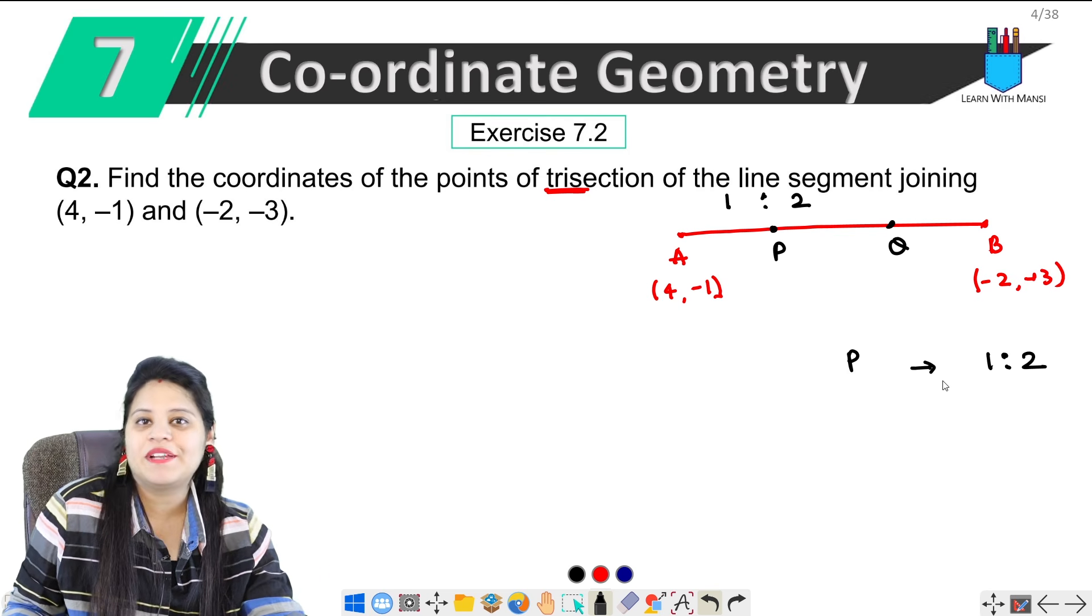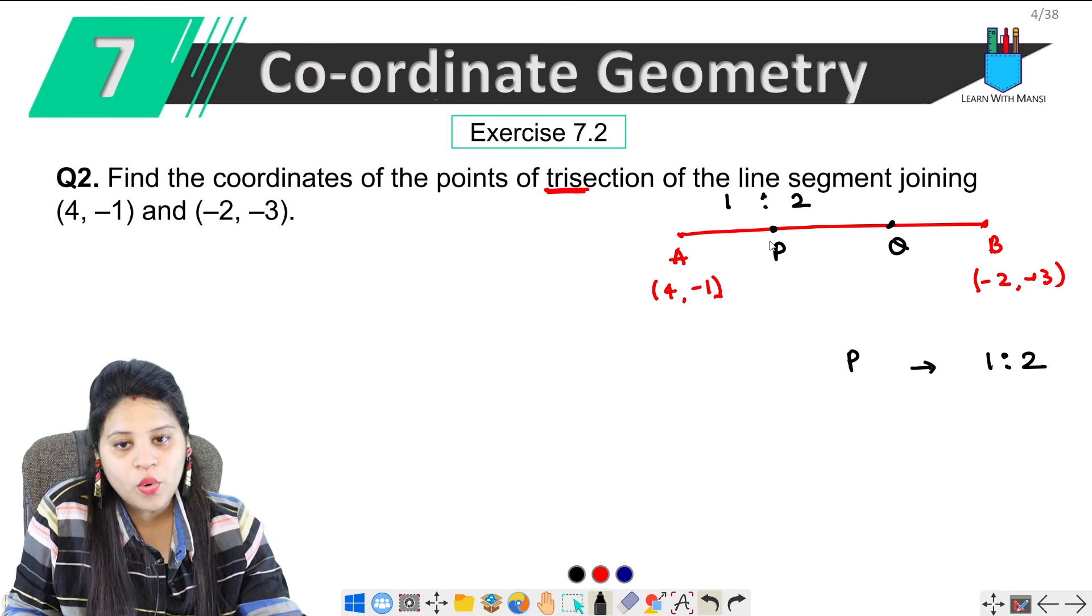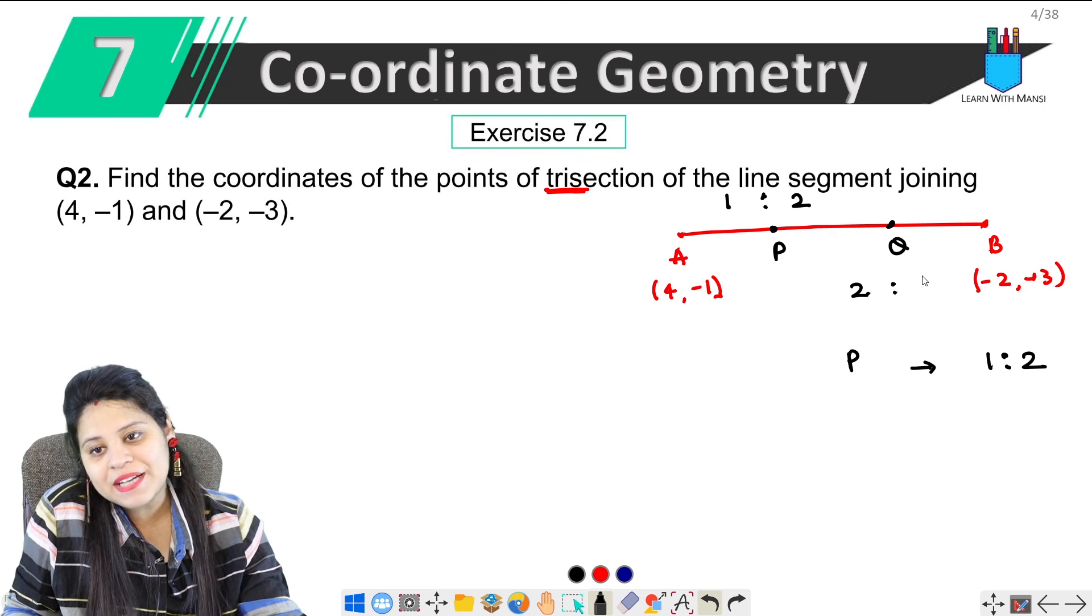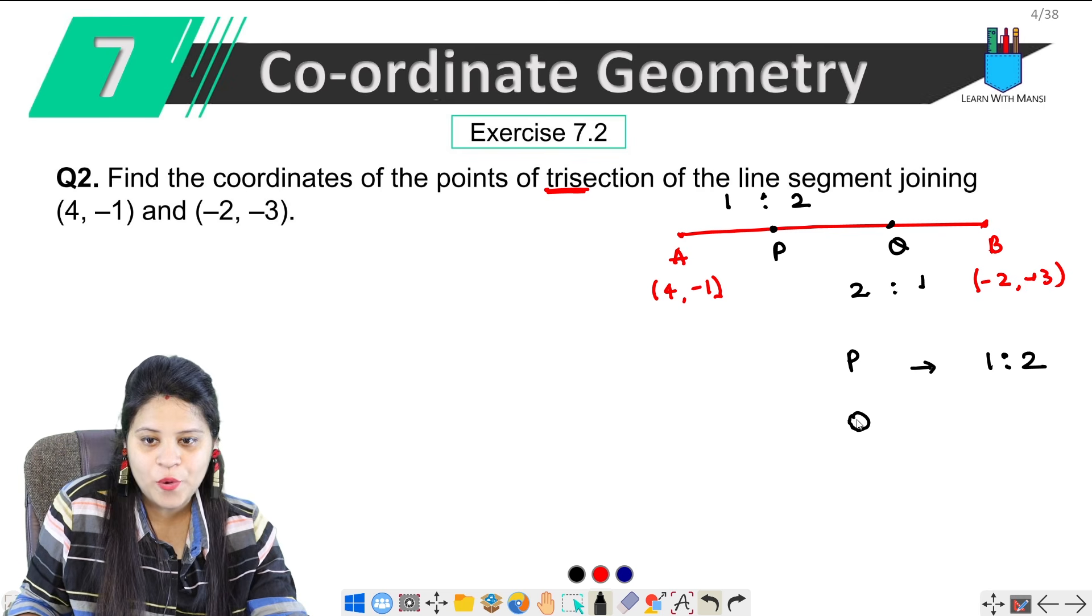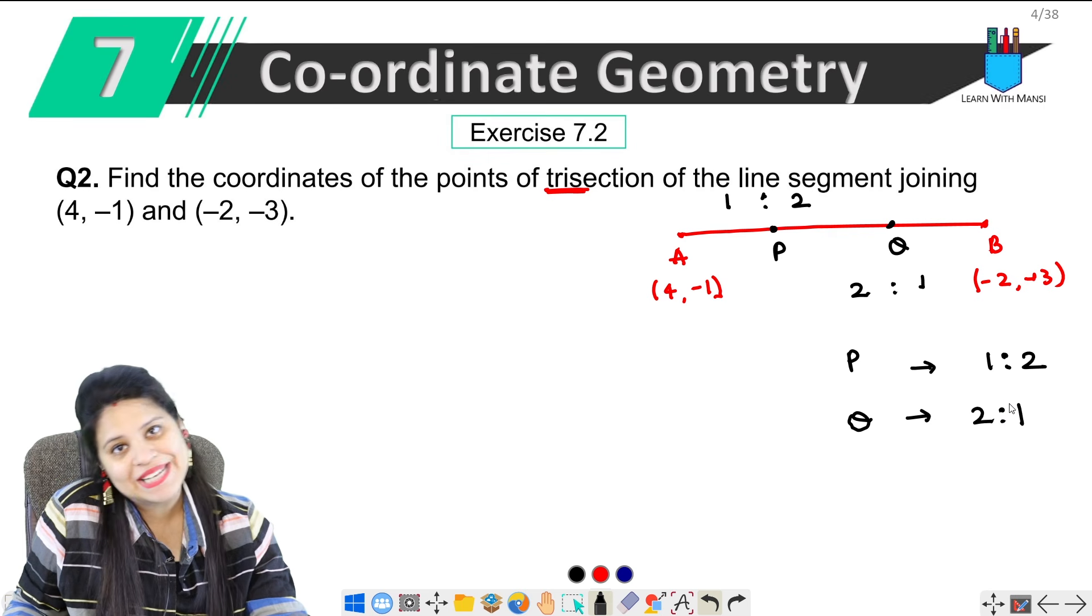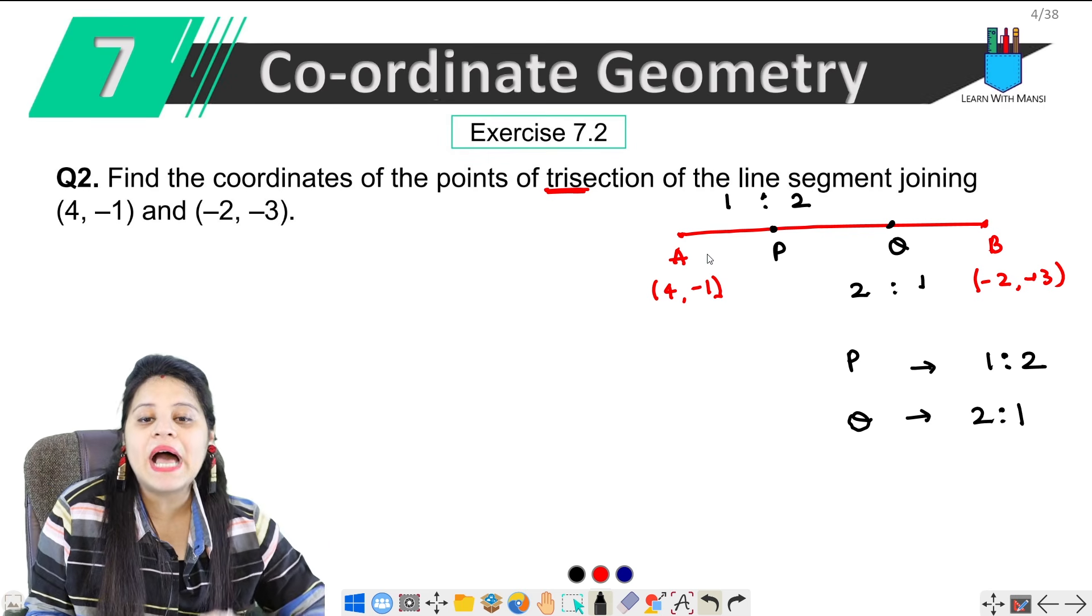Isi tarah se jab hum Q pe aayenge, to dekho 1, 2, yahan pe do parts hain aur is taraf ek part hai. To Q point jo hoga hamara woh 2 is to 1 ke ratio mein divide karega. So yahan pe itna clear ho gaya. Ab hame nikalna hai coordinates.